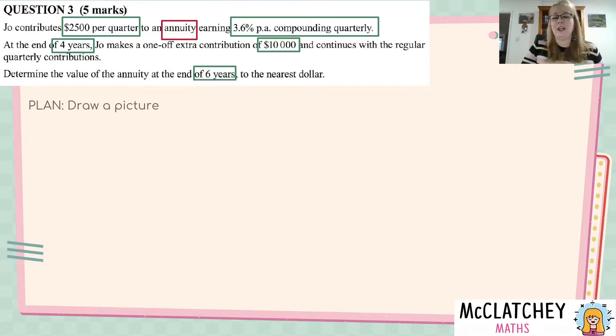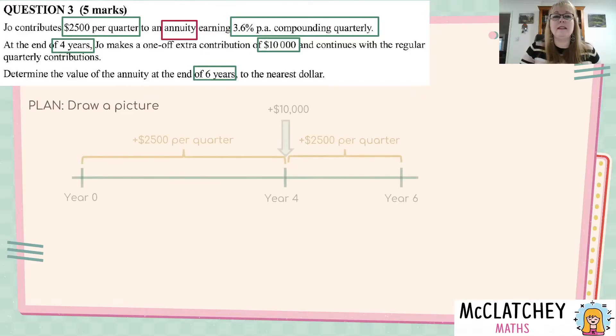Okay, so I would suggest that I'm a visual person. So, I like to draw a quick sketch about what's going on here. So, I've just drawn a quick little sketch just to demonstrate to you what's happening. So, we're putting $2,500 in every quarter for six years. You can see that there's a break in the middle where $10,000 goes in.